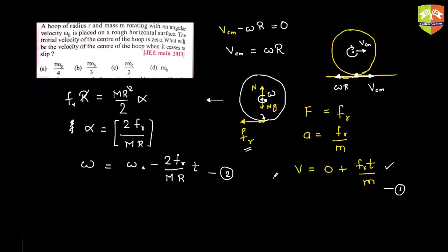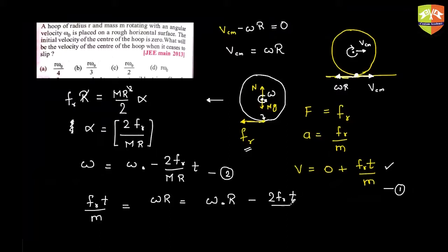For pure rolling to begin, v_cm must equal ω·r. So (f_r·t)/m = ω₀·r − (2f_r·t)/m. From this equation you get the value of t, and substituting back gives the velocity at which pure rolling starts.